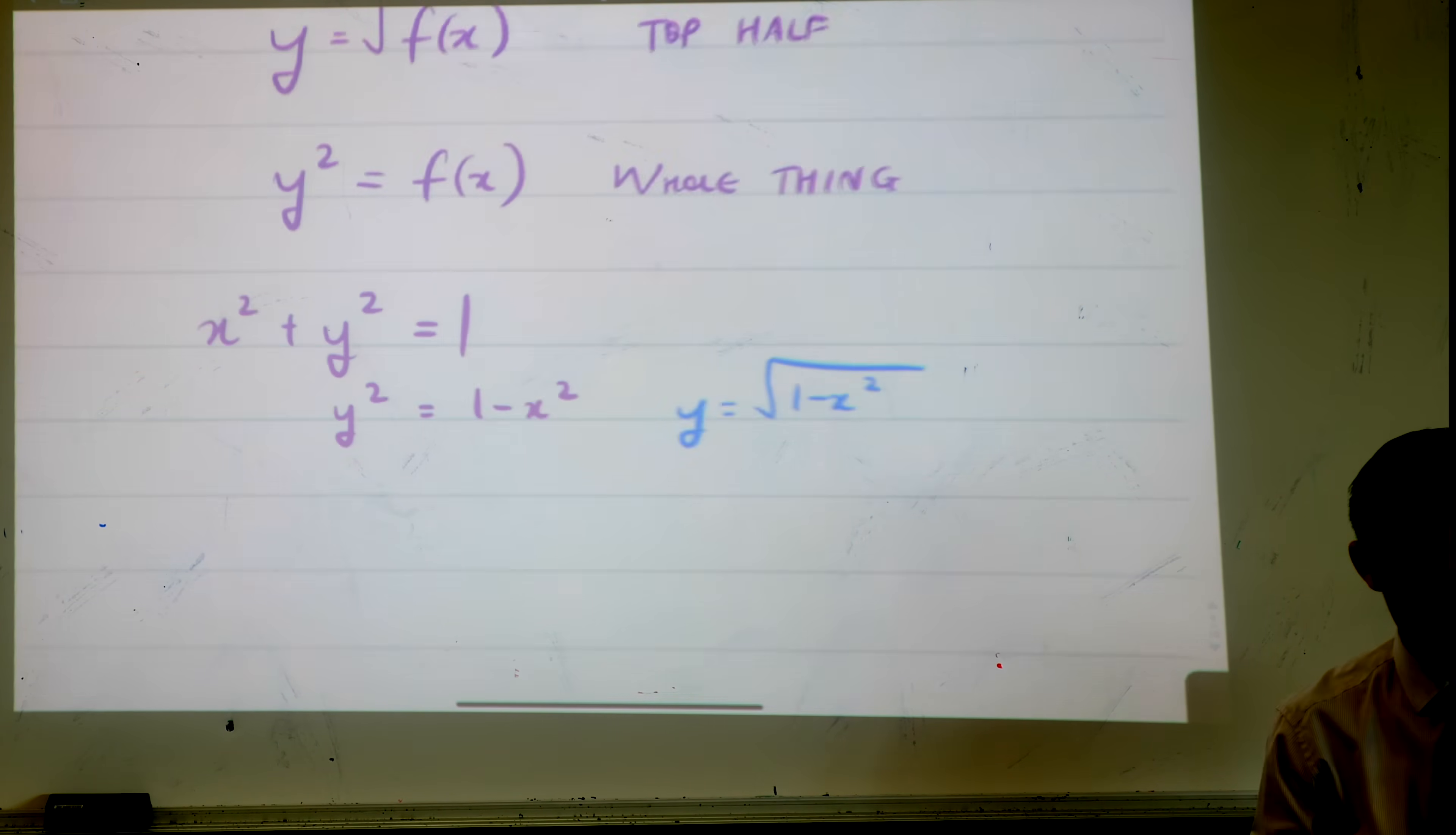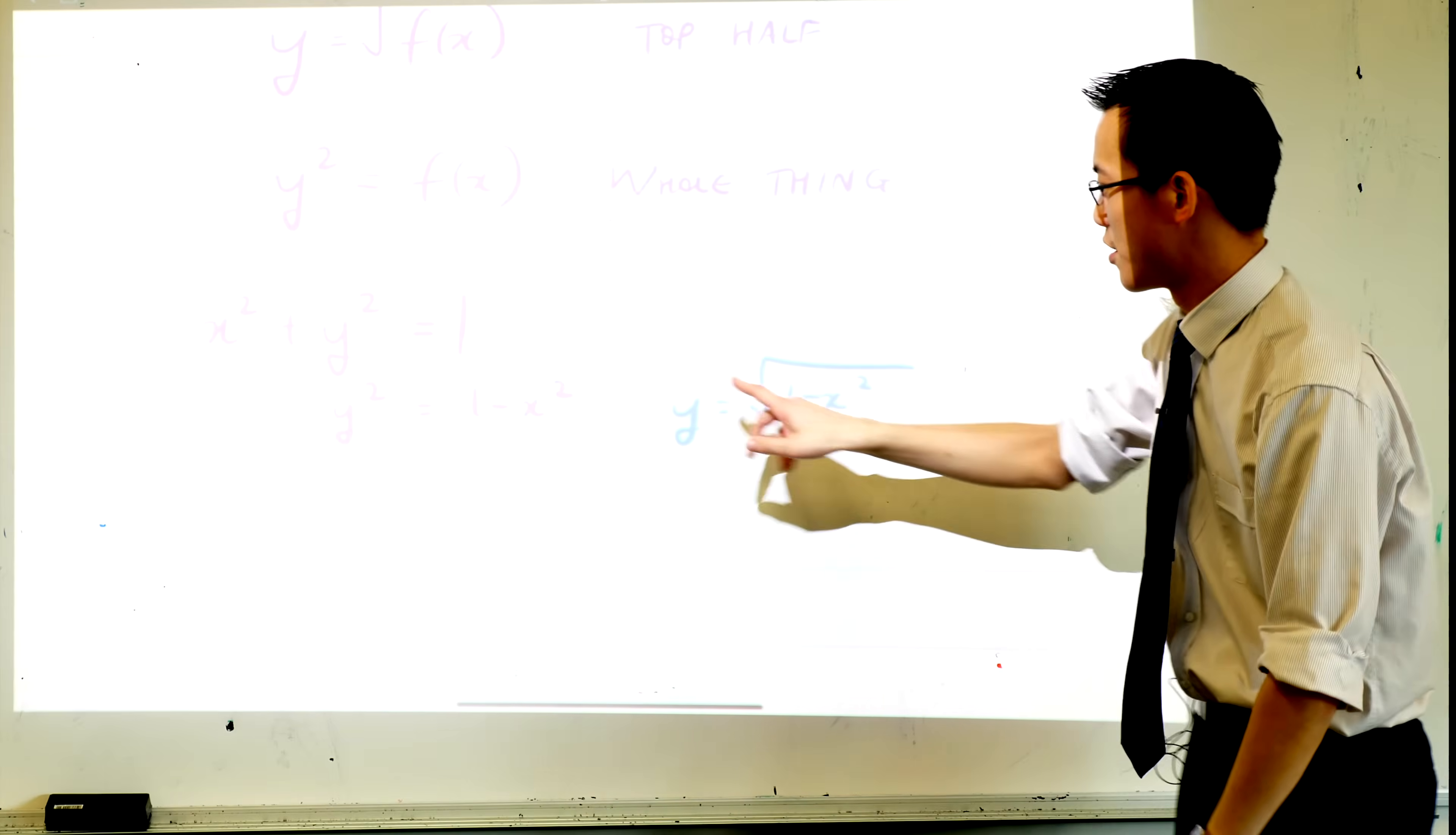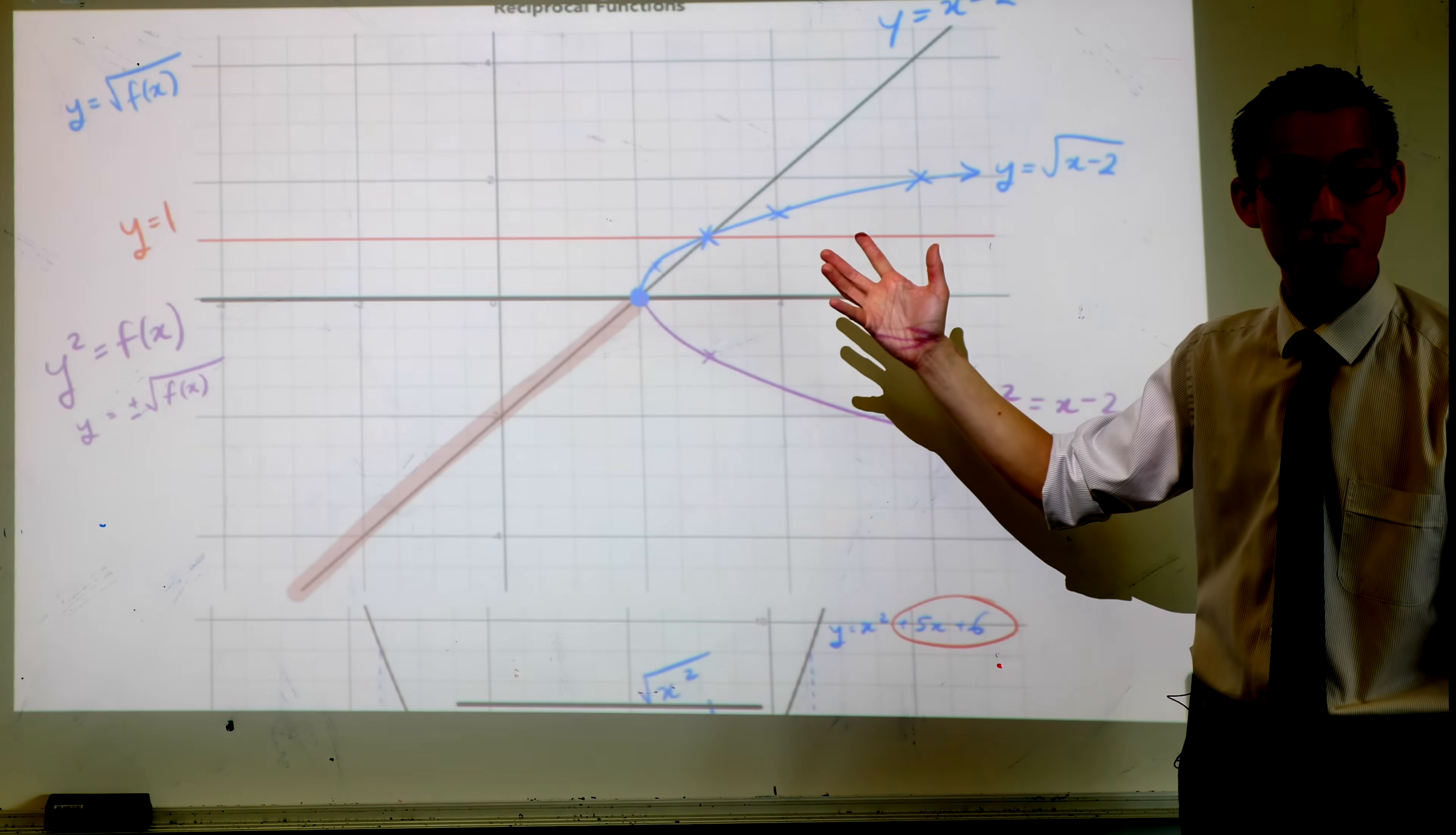So you can see, this is just the top half. And this is the whole thing. Y squared gives you the mirror image on both sides. The square root only gives you the blue part. Blue part there. Green part there, sorry. Blue. And then blue.